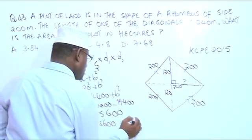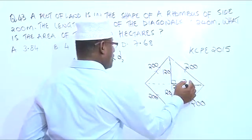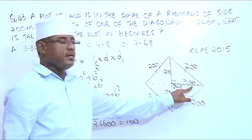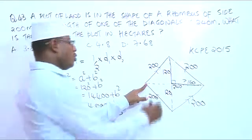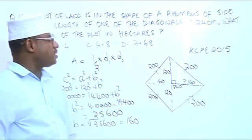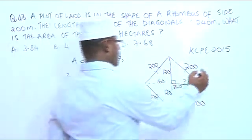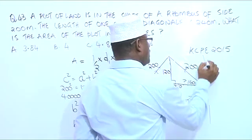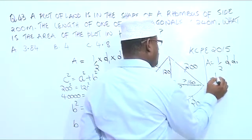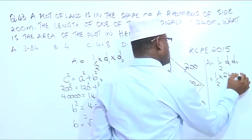So b is 160. Since the diagonal is bisected, we have 160 on each side, making the full second diagonal 160 plus 160, which equals 320. Now we can calculate the area. Area equals one half times D1 times D2, which is one half times 240 times 320. Simplifying, that is 240 times 160.